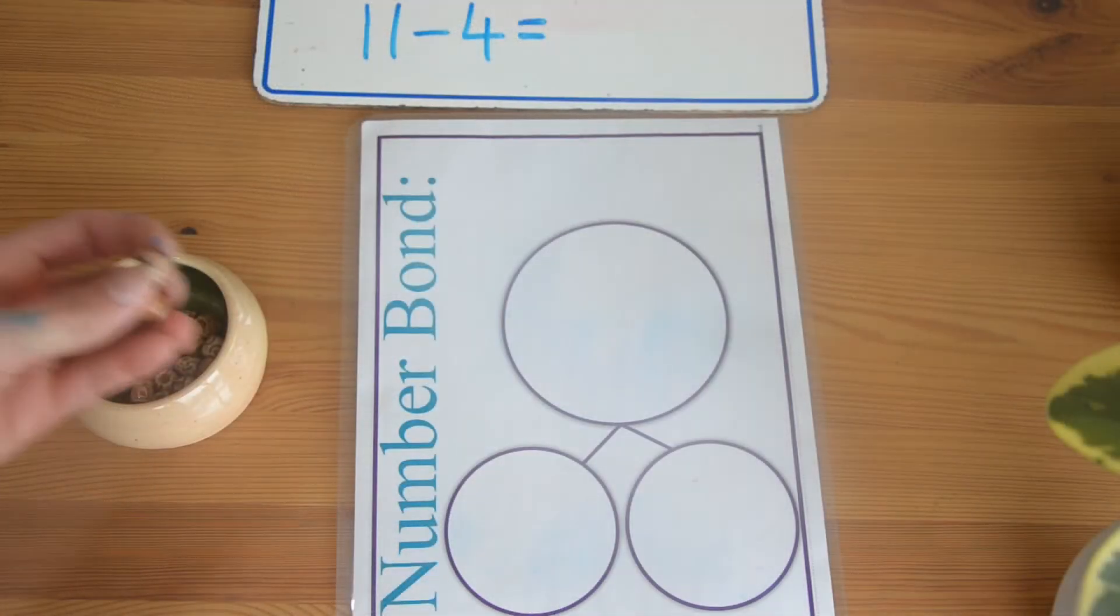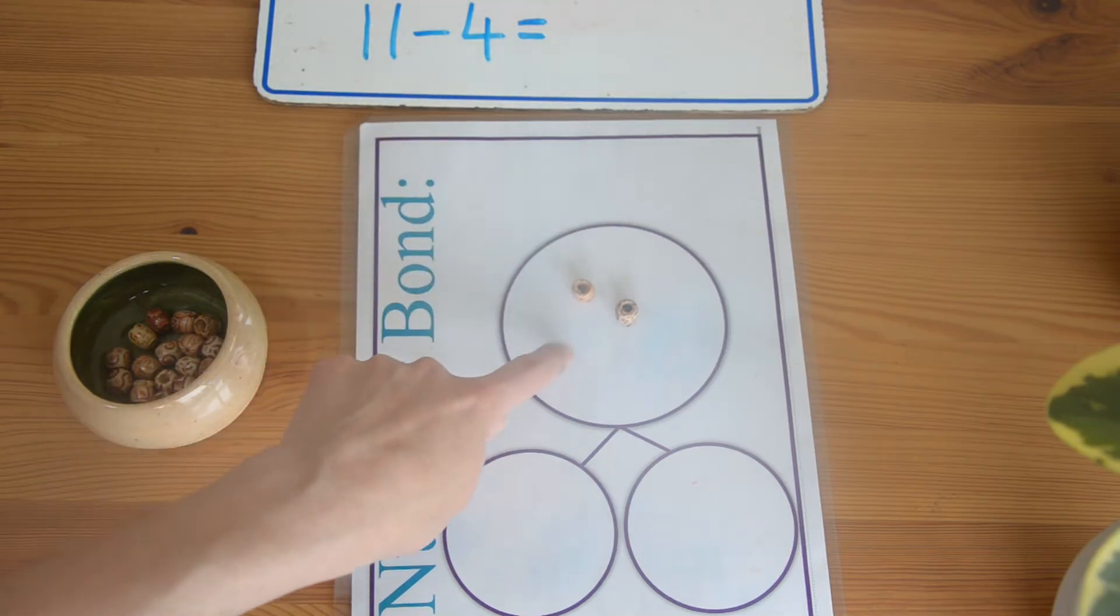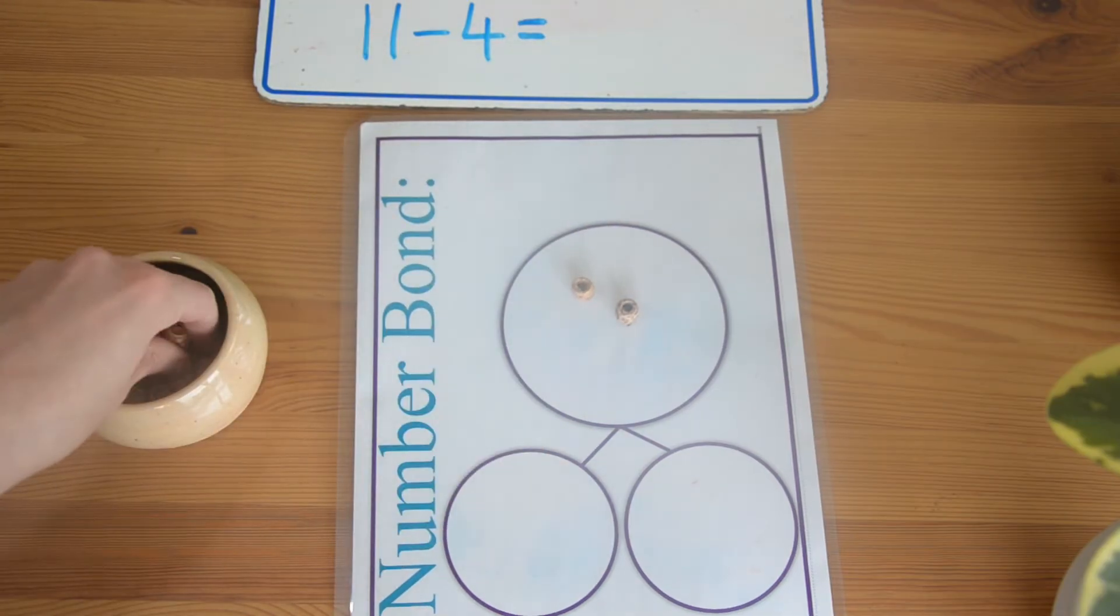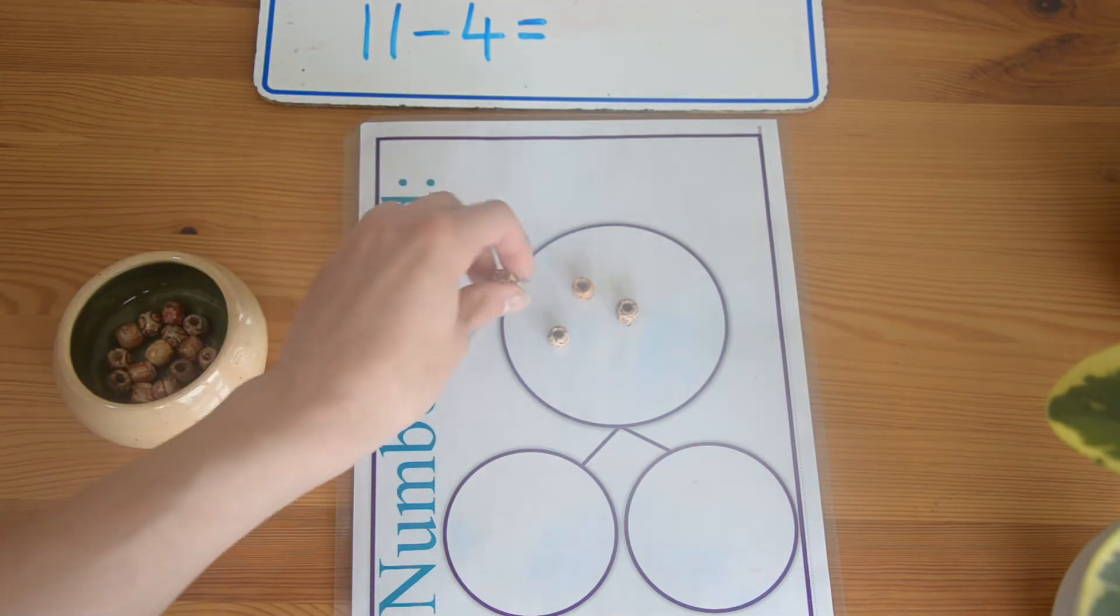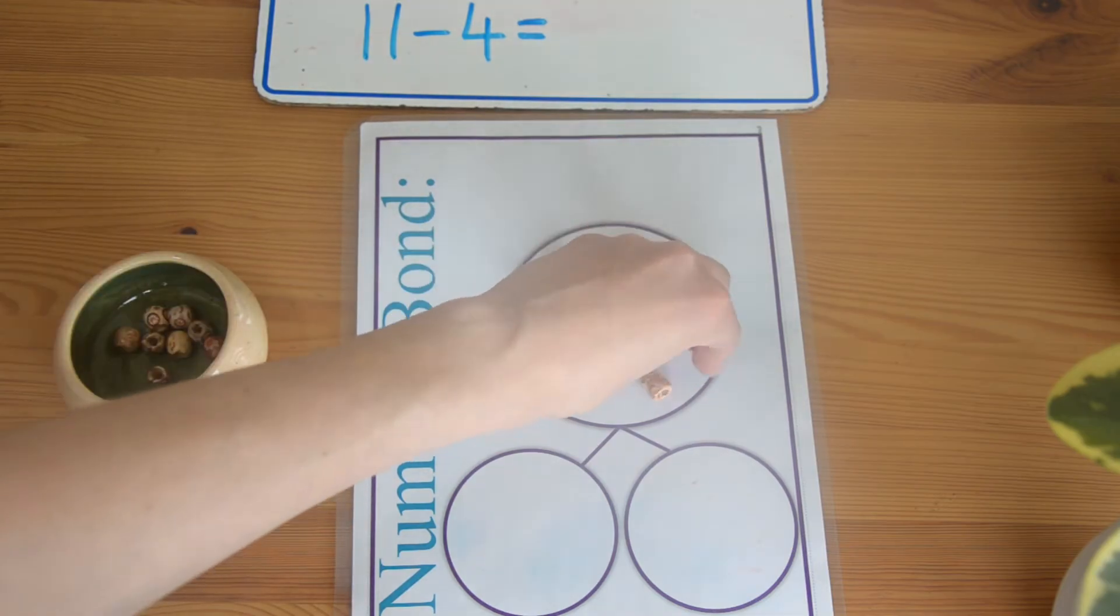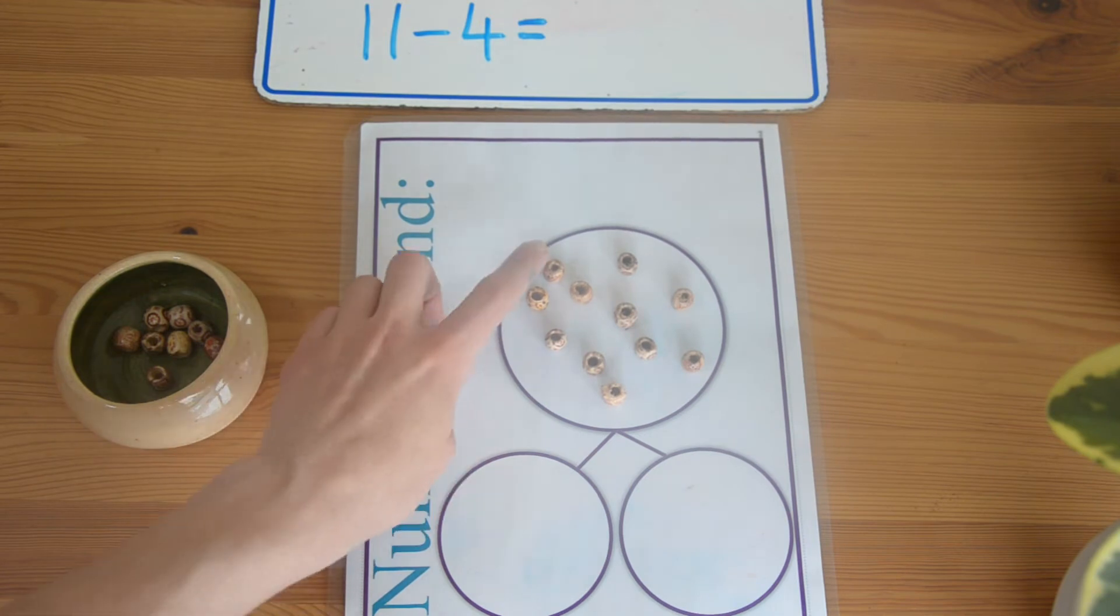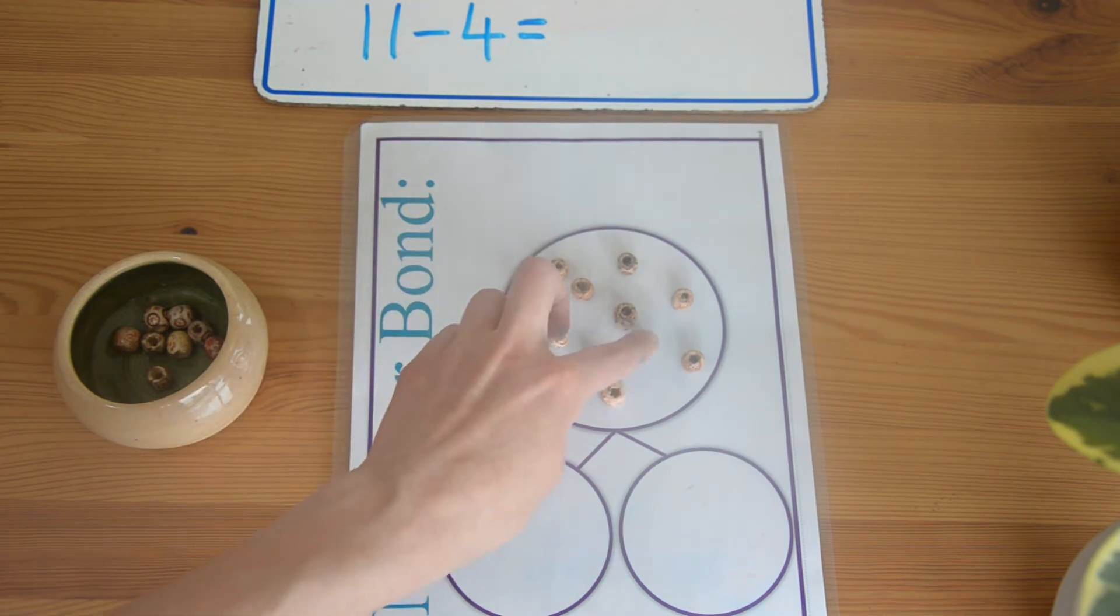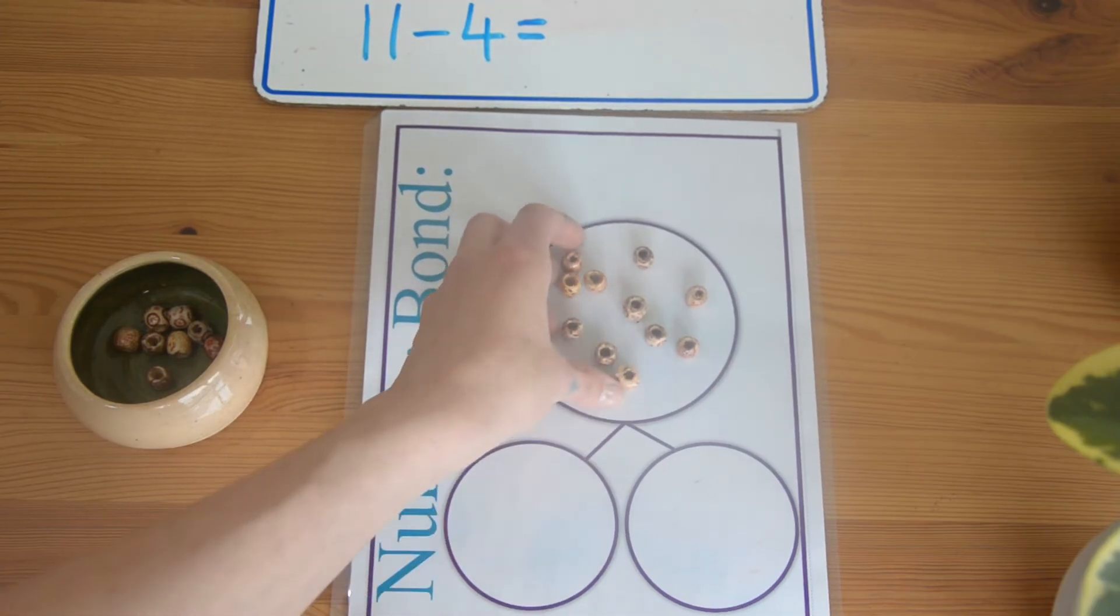With subtraction, I like to put the whole number in first because we know the whole number. How many do we need to put in for the whole number? Eleven. Let's count: 1, 2, 3, 4, 5, 6, 7, 8, 9, 10, 11. So now we have eleven.